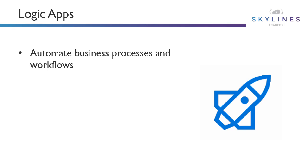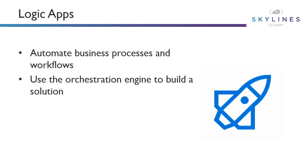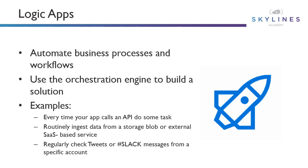One of my personal favorites are logic apps. These really allow us to automate business processes — think of it like creating your own orchestration workflows. There's an orchestration engine under the covers that helps with various tasks. For example, every time your app calls an API you want to do some task, or every time there's data in blob storage you want to do some work on that, or maybe there's an external SaaS service you want to connect to, like checking tweets or Slack messages. It's a very easy way to build automated workflows without having to learn a lot of code.